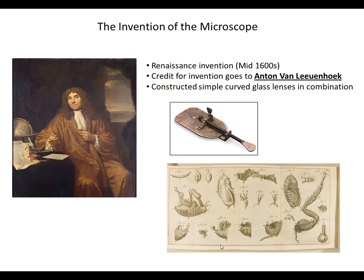Let's begin with the invention of the microscope. The microscope is really a Renaissance invention. The Renaissance was an interesting period in history in Europe — we were coming out of the dark ages, a time of war, famine, disease, and death. As conditions in Europe improved, there was a period of relative peace and freedom from the plague, so more attention could be turned to understanding the world. Other Renaissance inventions include the printing press, gunpowder, and the mariner's compass.